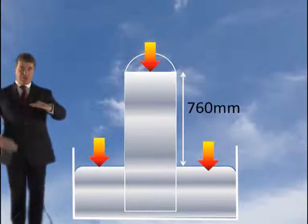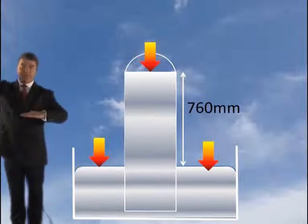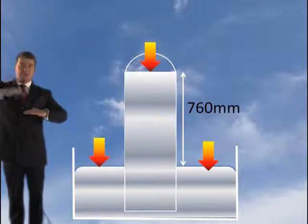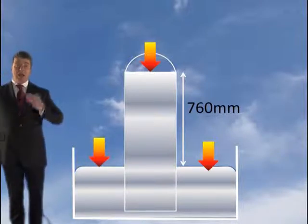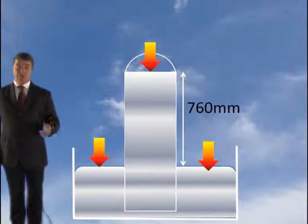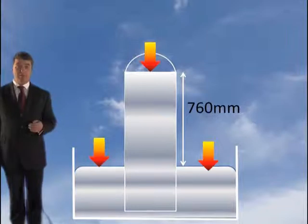A column of mercury 0.76 metres is the same as a column of air to the upper atmosphere, and the same as a column of water 11 metres high — it's based on density. That's where you get 760 millimetres of mercury quoted as atmospheric pressure, because it equates to atmospheric pressure.